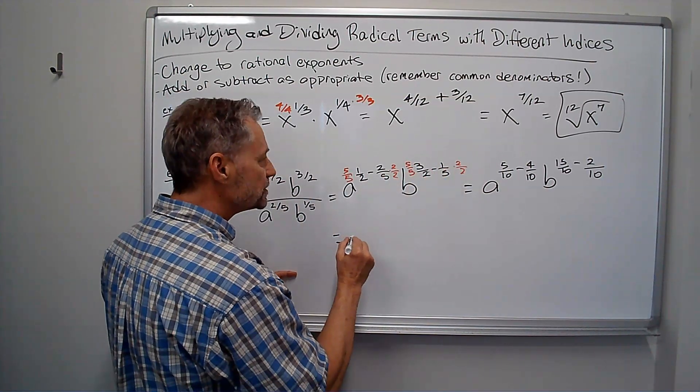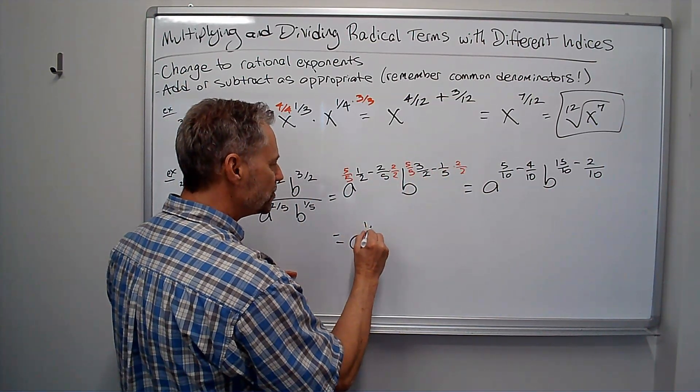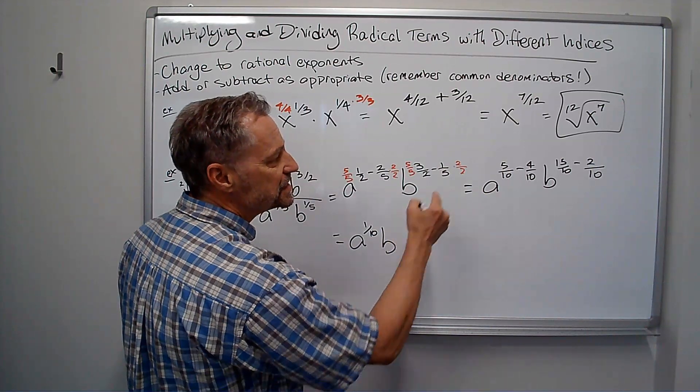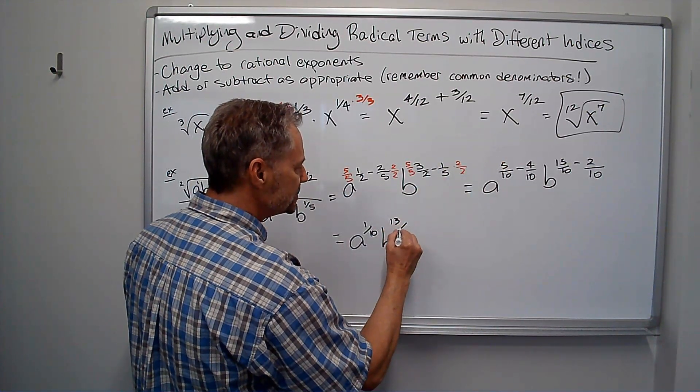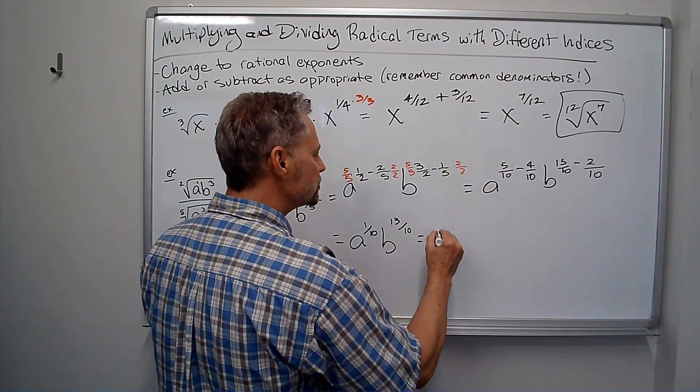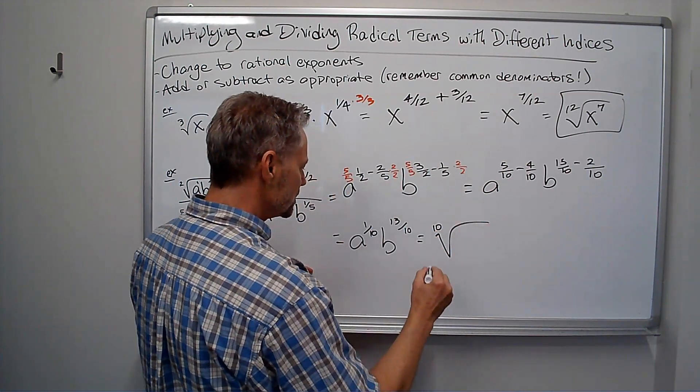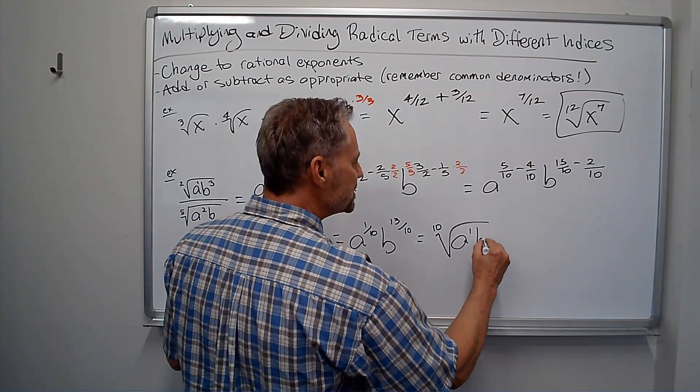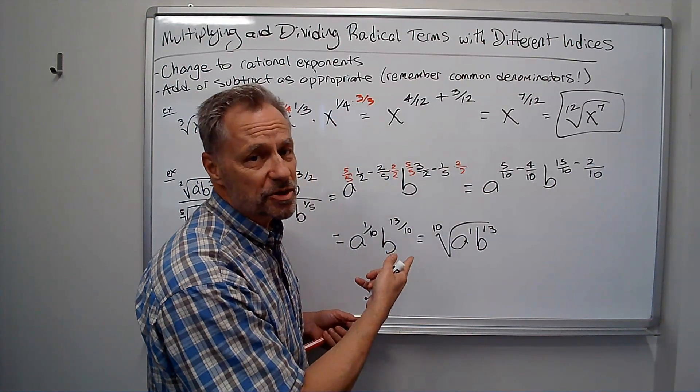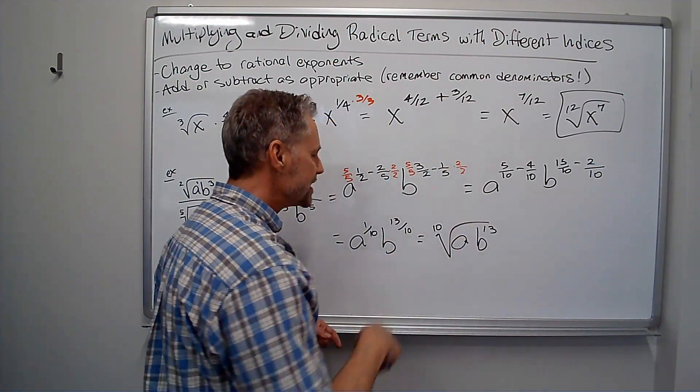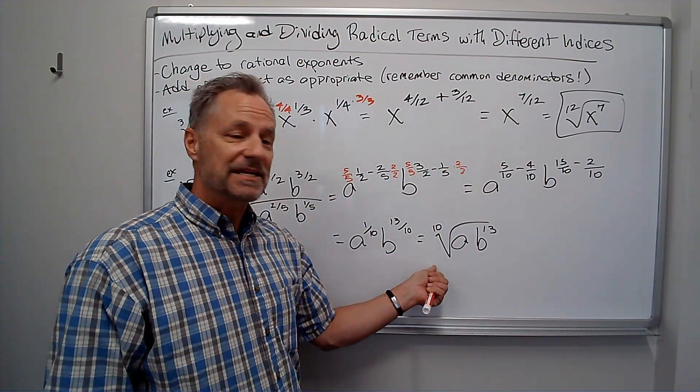Five minus four is one. Keep the denominator a to the one-tenth. B to the fifteen-tenth minus two is thirteen-tenths. So it's the tenth root of a to the first b to the thirteenth. Usually we don't put the one. I'm just going to erase that. And that's my final answer.